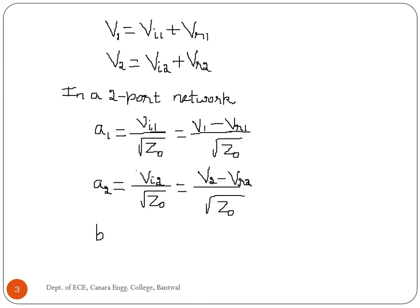The reflected wave at port 1, B1, is equal to the reflected voltage at port 1 divided by root Z0. The reflected voltage at port 1 is given by the total voltage at port 1 minus the incident voltage at port 1, all divided by root Z0.